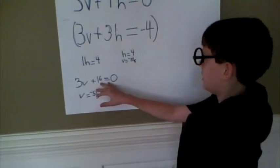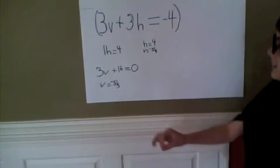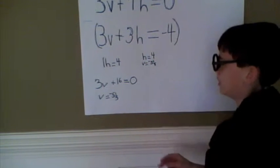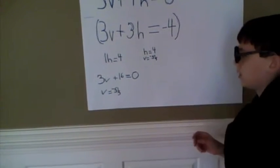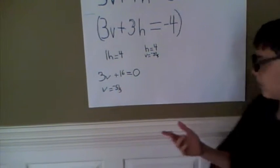When I subtract the equation, 3v minus 3v is 0, so those cancel out. And 4h minus 3h is 1h. So, in 0 minus negative 4 is 4. So, 1h equals 4 is the equation.